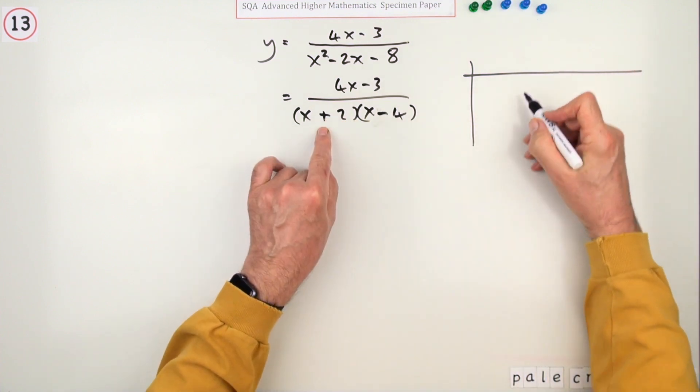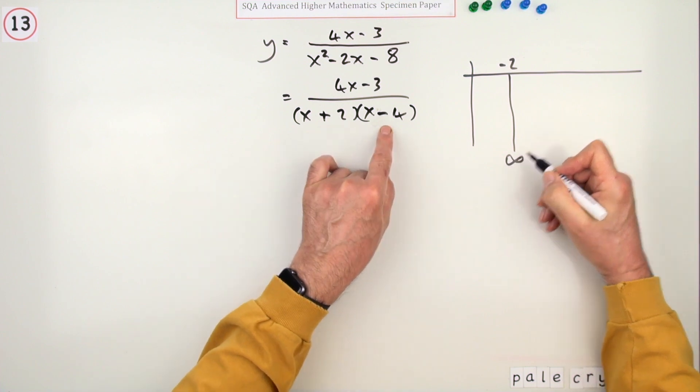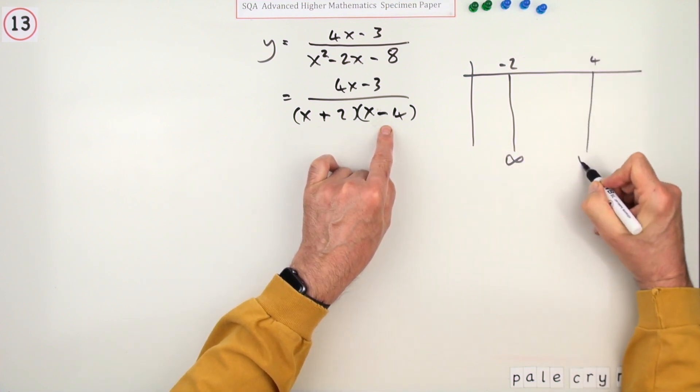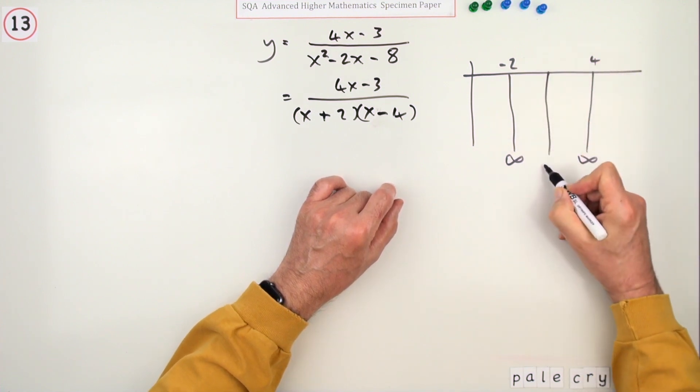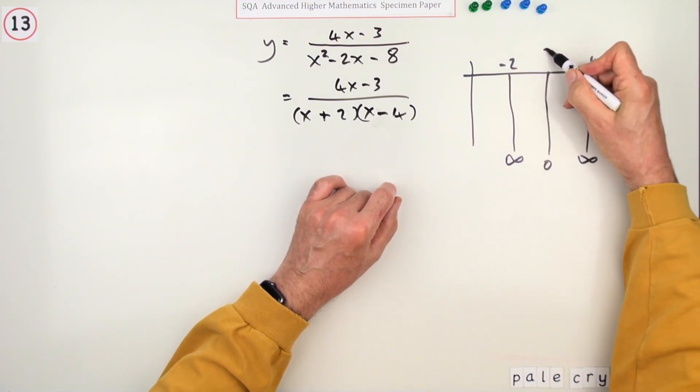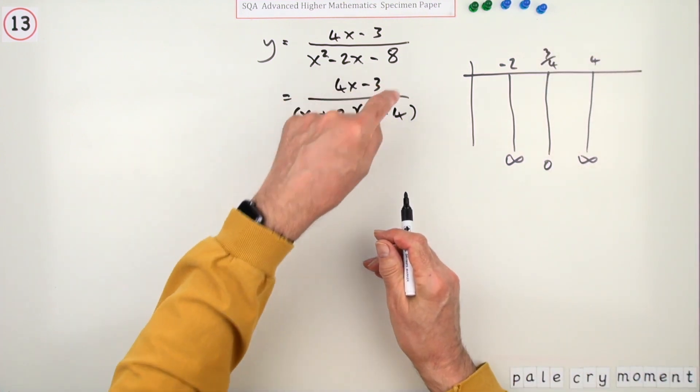And then make up a table of what the critical values of these are, when the parts become zero. So at negative 2 you've got an asymptote, at 4 you've got an asymptote, but also at three quarters, which was between them, it actually was zero.